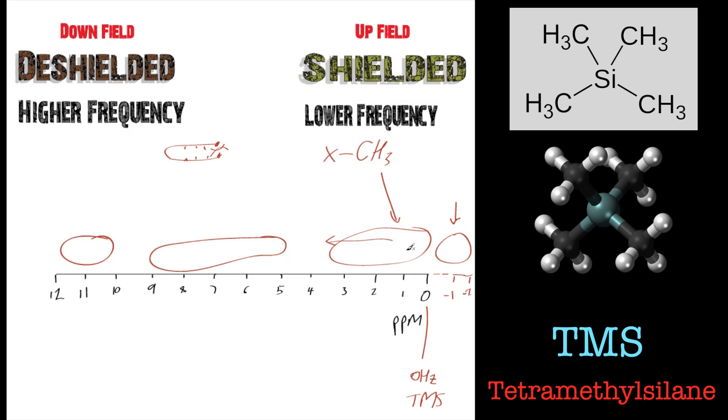And we use TMS for that, tetramethylsilane as an internal standard. And depending on the magnetic field strength, let's say we have a 500 megahertz NMR. And every part per million, there's a million hertz, is in a 500 megahertz NMR, is worth 500 hertz.